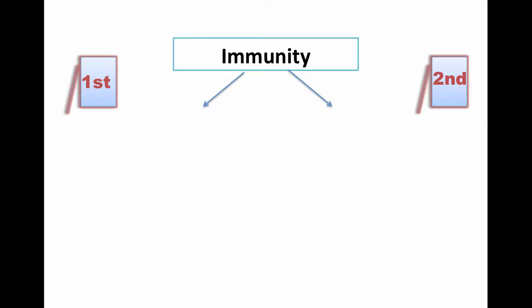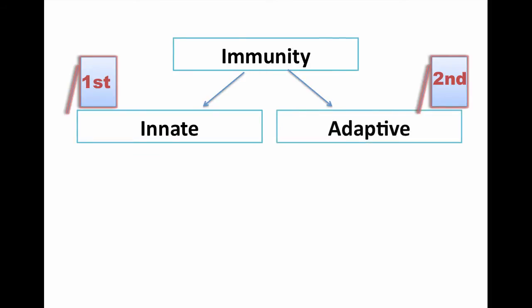There are two main types of immunity. Your first line of defense which is your innate immunity and your second line of defense which is your adaptive immunity. This is something that you acquire.